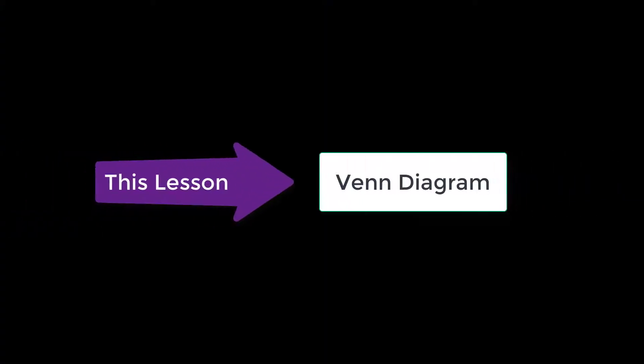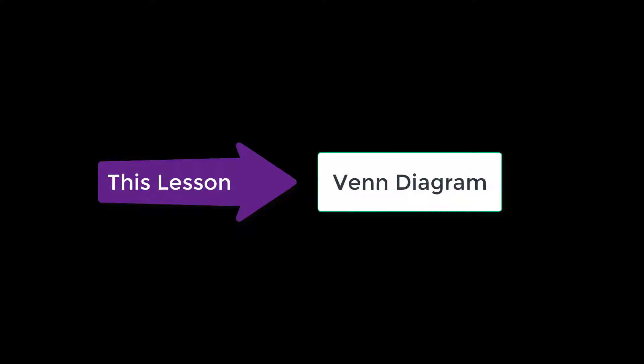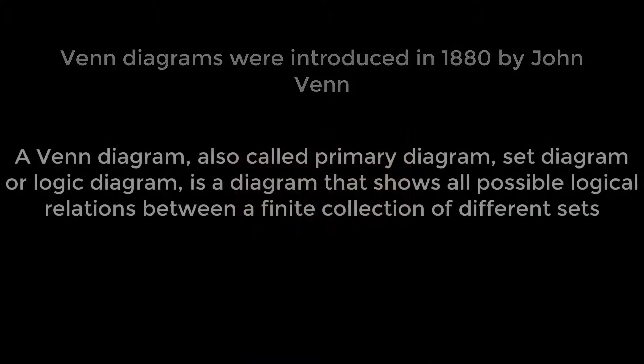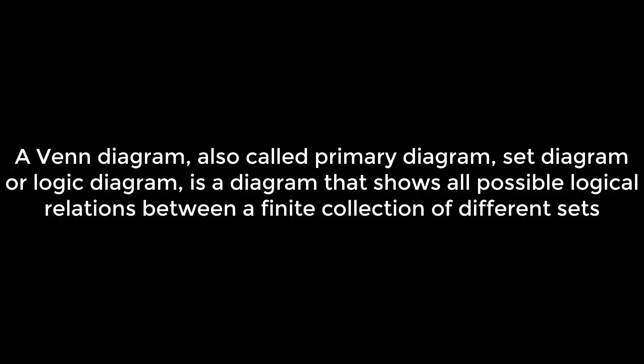In this lesson we are going to learn Venn diagrams. Venn diagrams were introduced in 1880 by John Venn. A Venn diagram, also called a primary diagram, set diagram, or logic diagram, is a diagram that shows all possible logical relations between a finite collection of different sets.